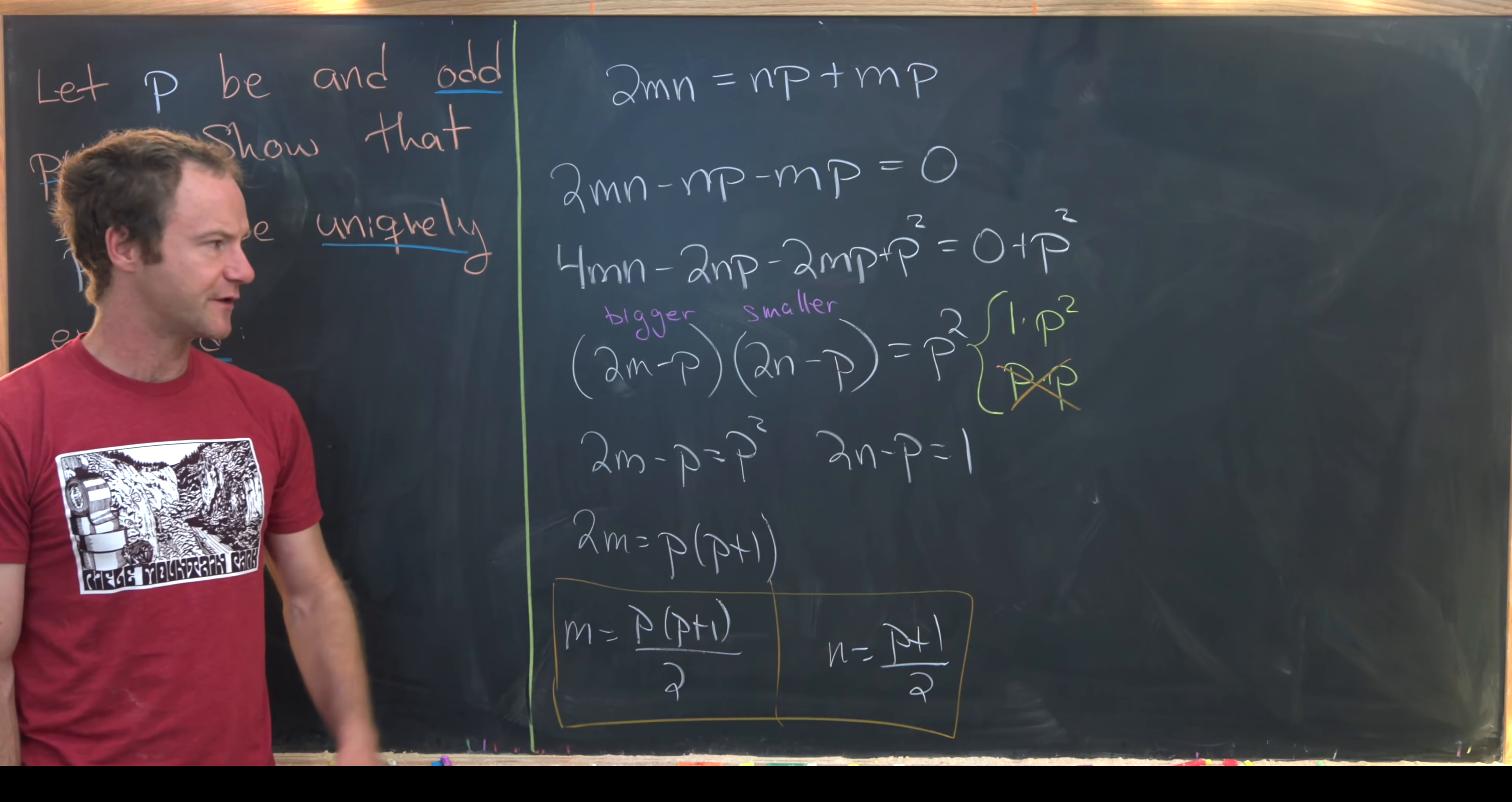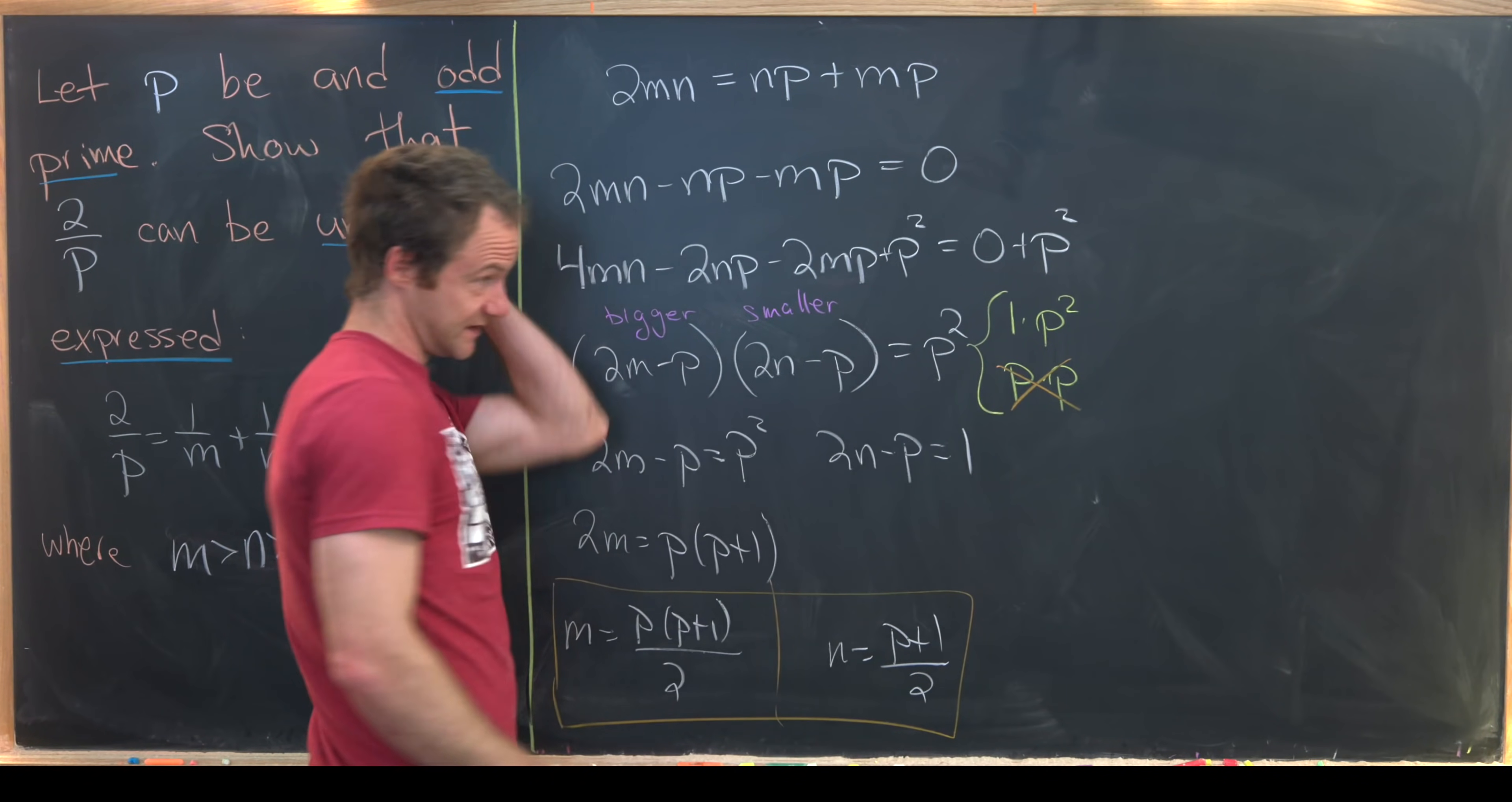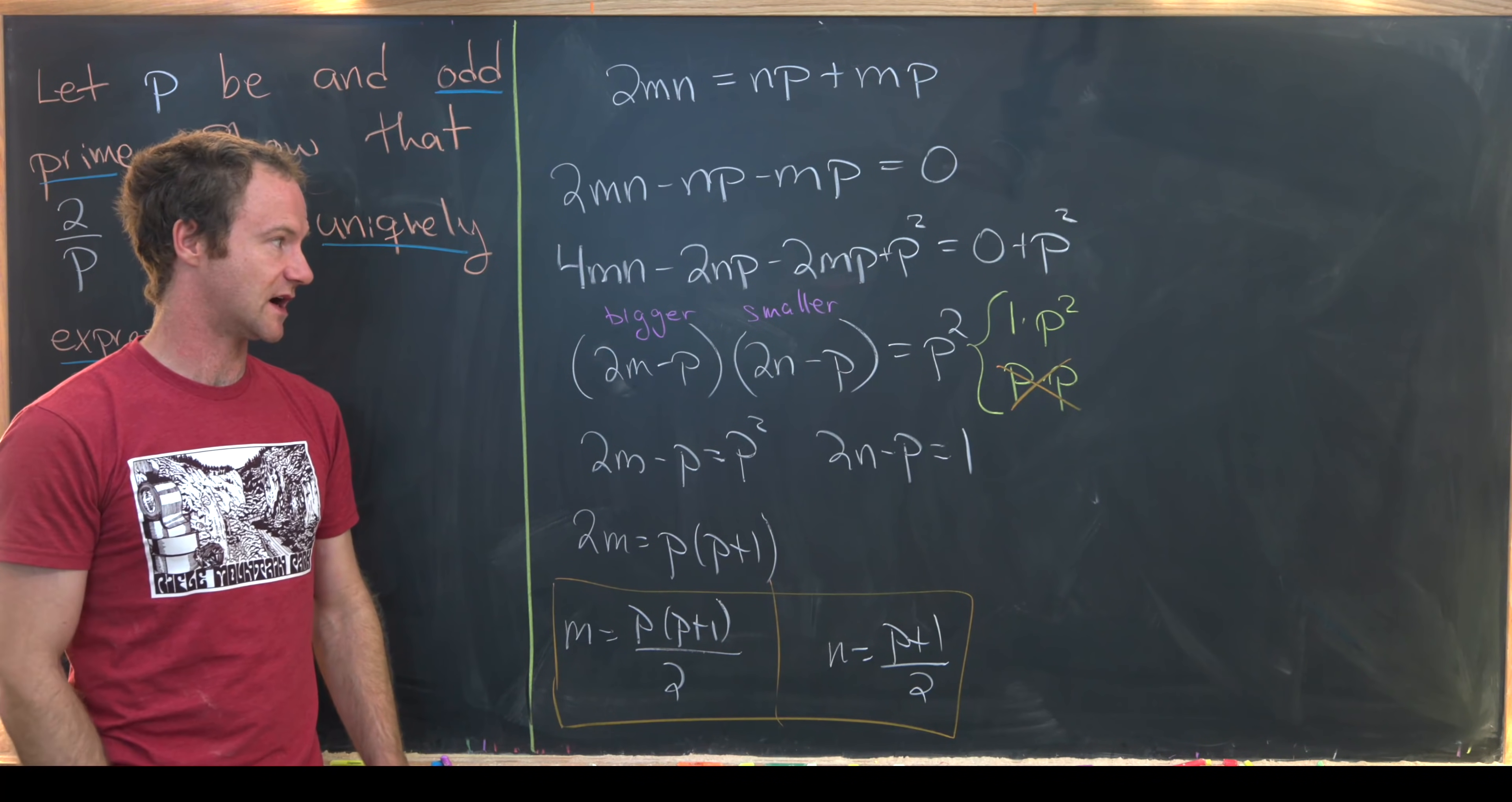Now how do we know that this is unique? Well we know that's unique because these are the only two factorizations of P squared over here. And we argue that this one which is x'd out in orange is not possible.